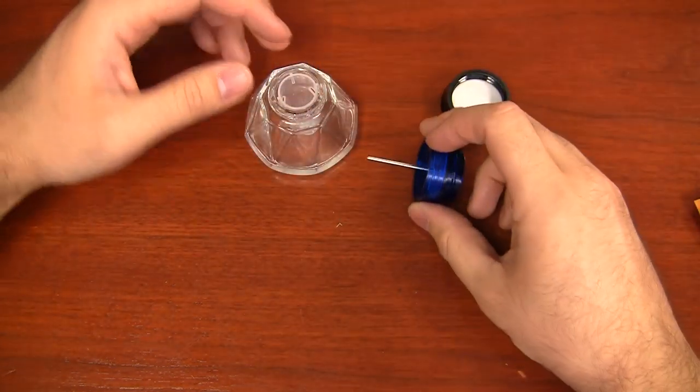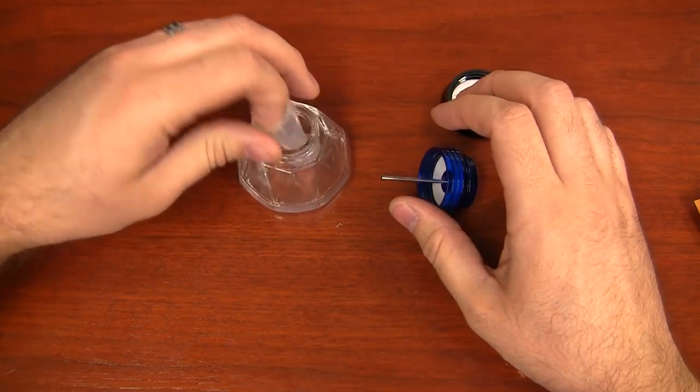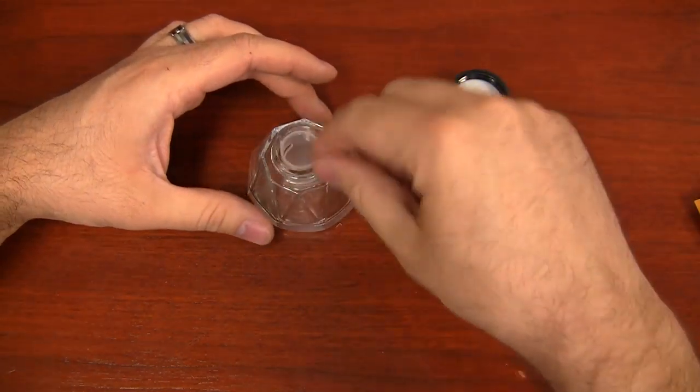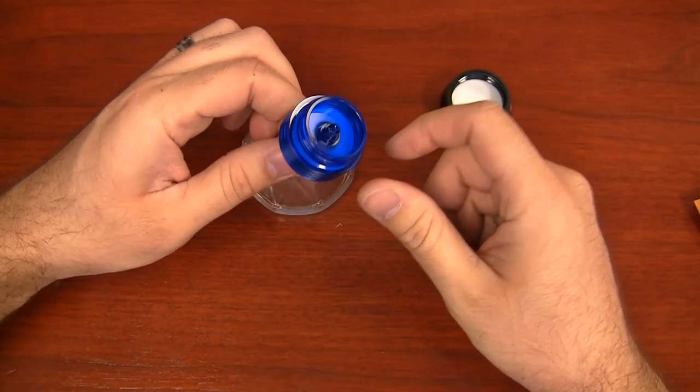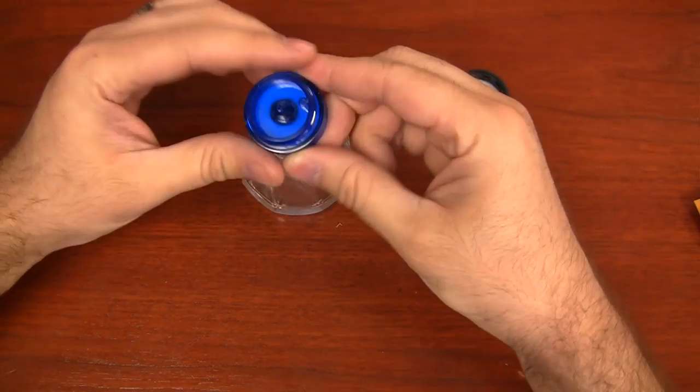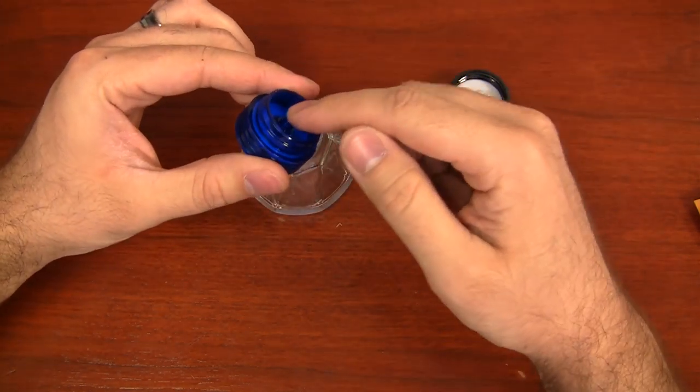So the way that these bottles work, if you're not familiar with it, it's a glass inkwell. It has a cone insert, which is really nice. So you can fill any pen you want just from the cone insert. But this little cap part here, this is very simple. And it just draws ink up through here and fills your pen directly from here.